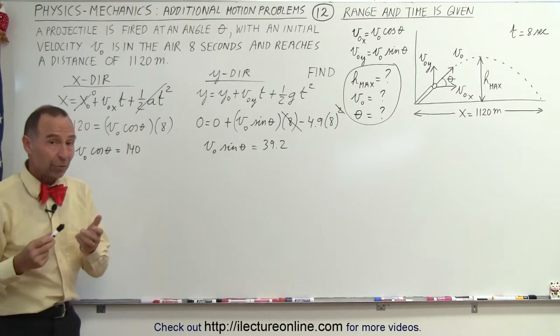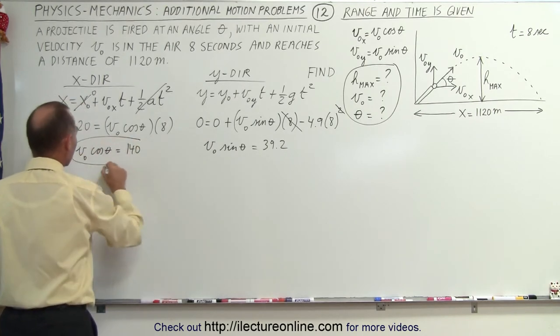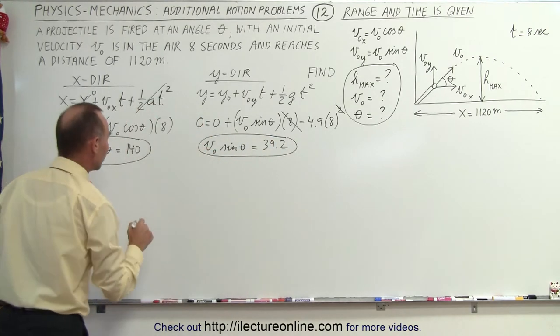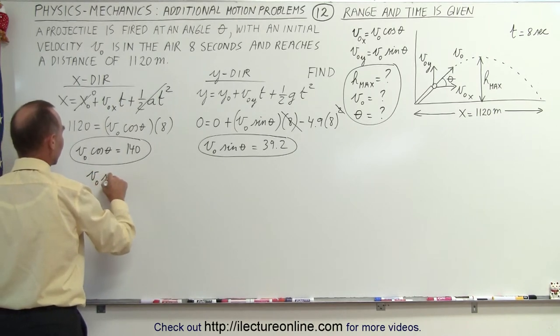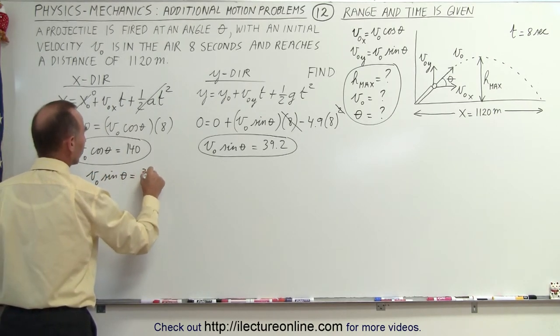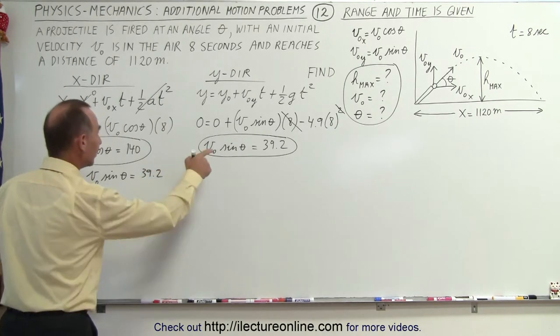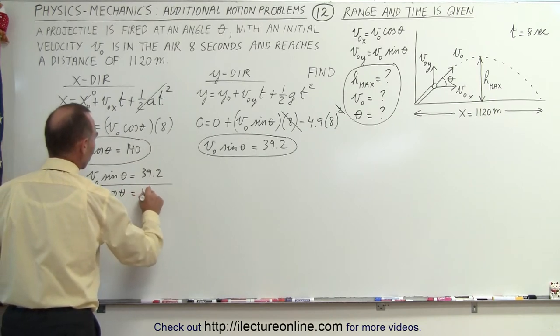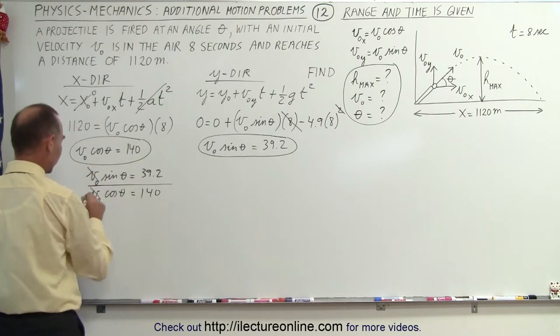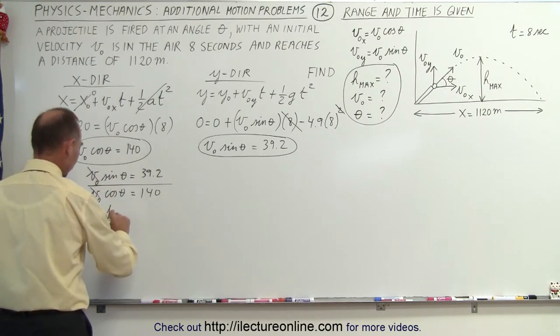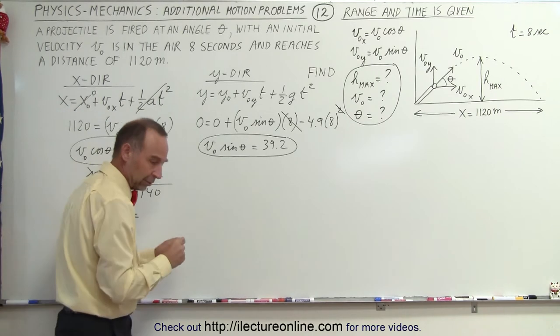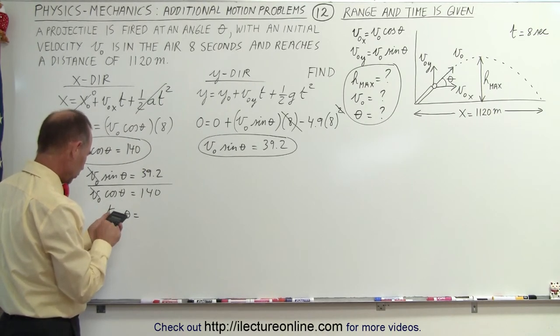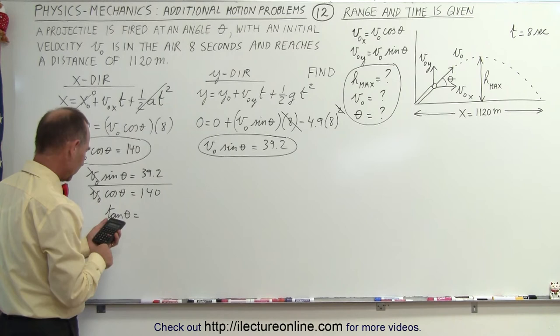Okay, now we have two equations and two unknowns. So we can solve those simultaneously. The technique we can use here is divide one by the other because then the v initials cancel out. So we have v initial times the sine of theta equals 39.2, and we divide that by v initial times the cosine of theta, which equals 140. Notice the v initials cancel out and the sine divided by the cosine is the tangent. The tangent of theta equals that ratio, so we have 39.2 divided by 140.